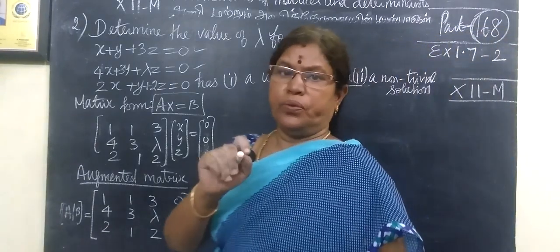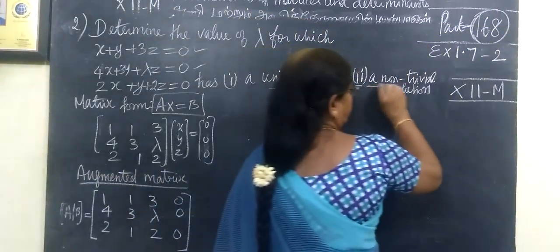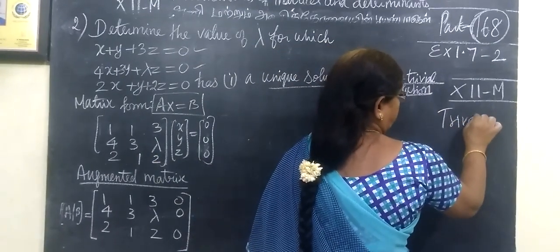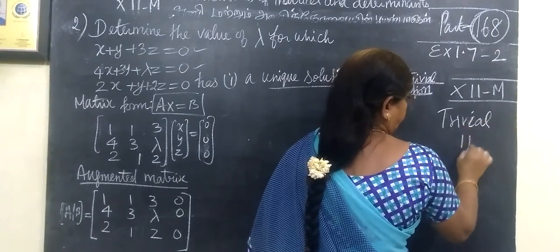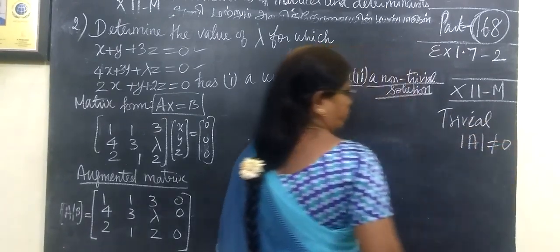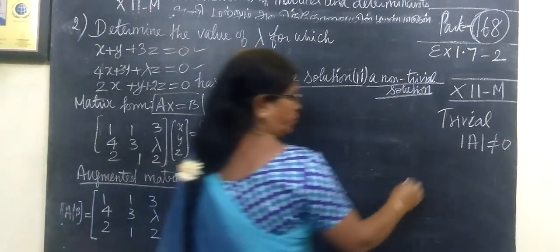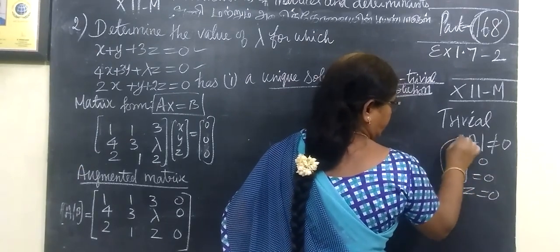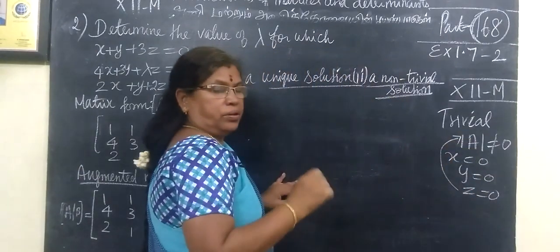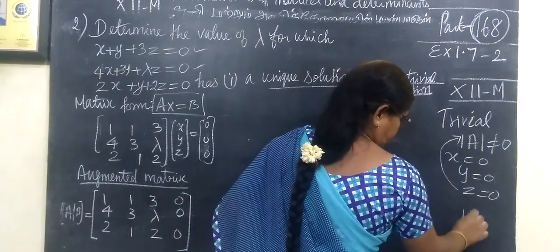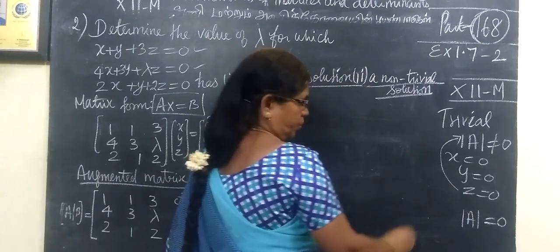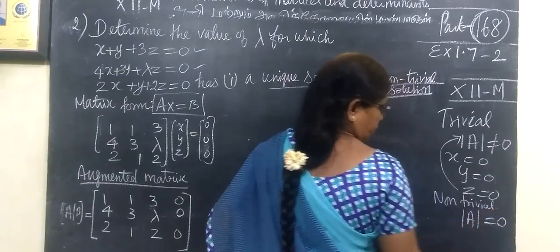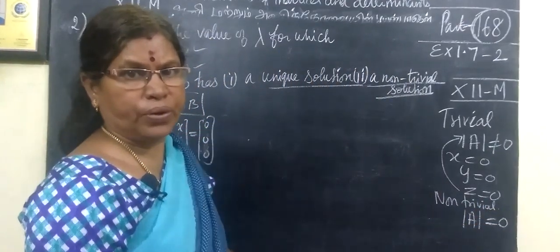We need to determine when the system has unique solution or non-trivial solution. For trivial solution, determinant A is not equal to 0, giving trivial solution x=0, y=0, z=0. For non-trivial solution, determinant A is equal to 0.